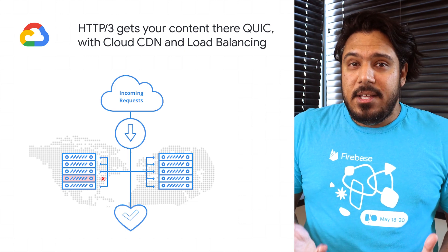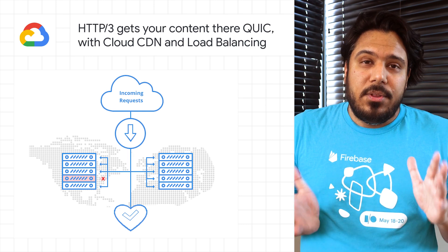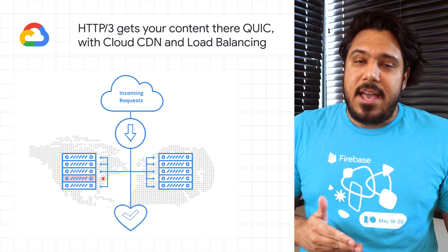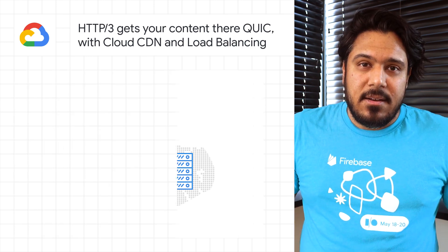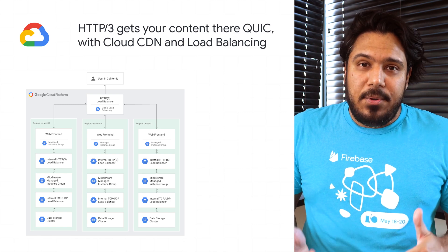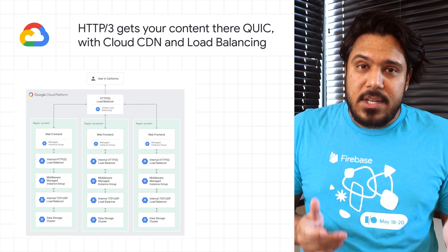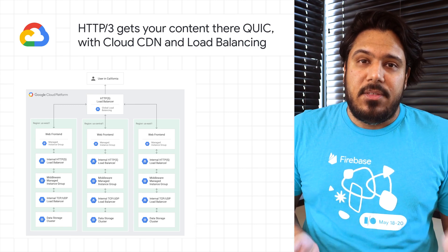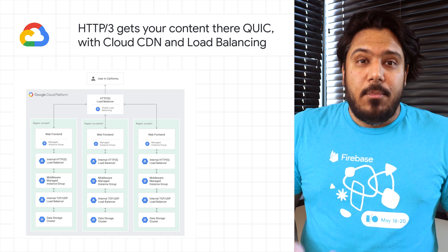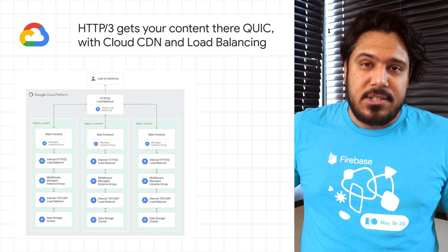To use HTTP 3.0 for your applications, you can enable it via the Cloud Console or the gcloud SDK — no application updates needed. Check out the post for examples of performance improvements using HTTP 3.0 and more info on enabling it for your applications.